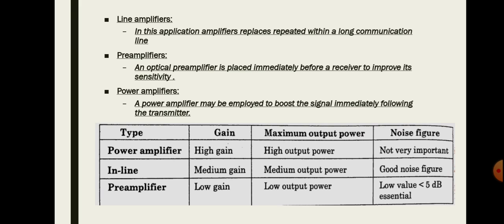A comparison table shows the differences in gain and maximum output power. Power amplifiers have high gain and high output power. Inline amplifiers have medium gain and medium output power, while preamplifiers have low gain and low output power. Regarding noise figures, noise figure is not critical for power amplifiers, inline amplifiers have a good noise figure, and preamplifiers require a low noise figure of less than 5 dB.